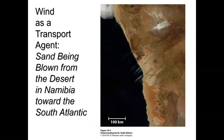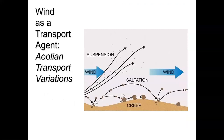Wind is an important agent of sediment transport too. Here we see the Namibian desert off Africa blowing huge clouds of sand out into the South Atlantic. Wind works not just by suspending the finest particles, but much like the bedload of a stream, you have grains that roll or bounce — creep being grains that move right along the surface, saltation being grains that bounce into other grains and force them upward. The finest particles go into suspension, moderately sized ones move by saltation, and the largest grains move by creep.